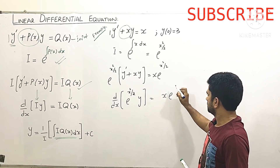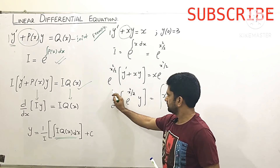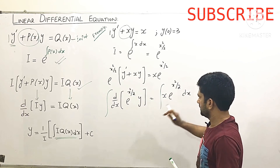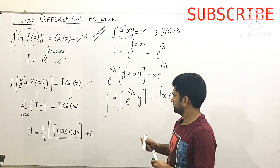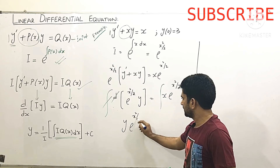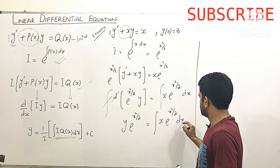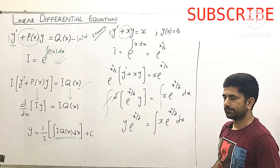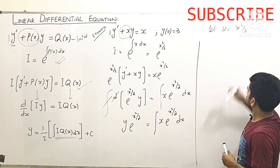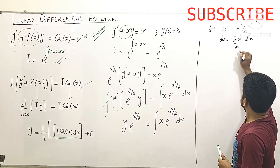We have d/dx[e^(x²/2)·y] = x·e^(x²/2). We take the integral on both sides; this gives y·e^(x²/2) = ∫x·e^(x²/2) dx. We solve the right-hand side integral by substitution: let u = x²/2, then du = x dx, so the 2's cancel out.